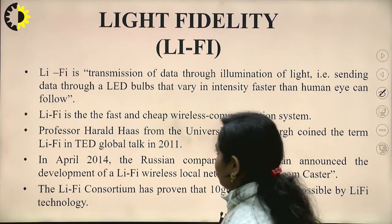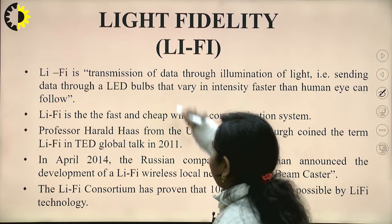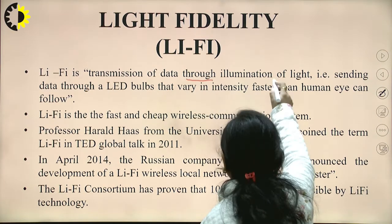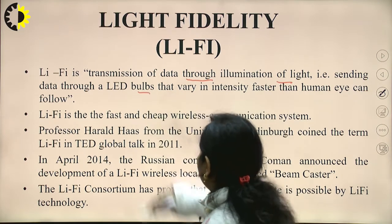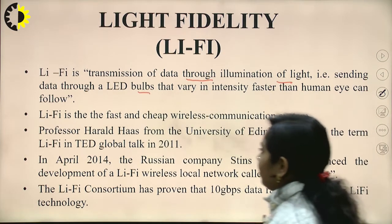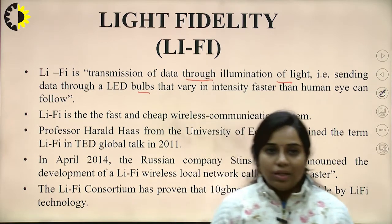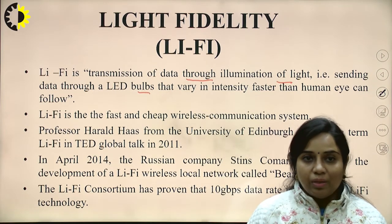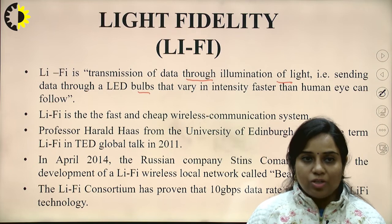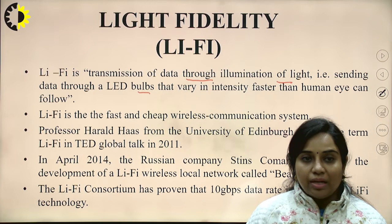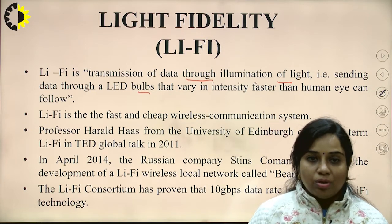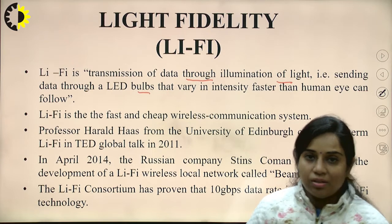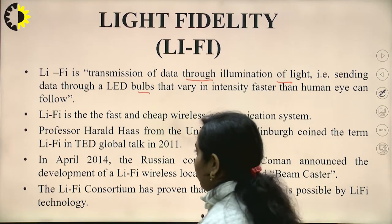Li-Fi is the transmission of data through illumination of light — that is, sending data through an LED bulb that varies in intensity faster than the human eye can follow. This is the basic introduction of Li-Fi: whenever communication is to take place between different nodes in a network, it is done through light illuminated by the LED bulb, and this will travel faster than the human eye can follow.